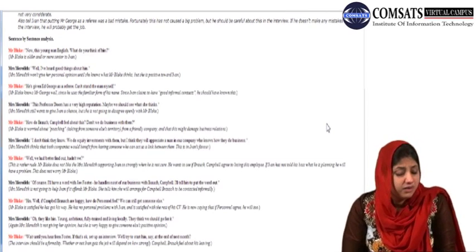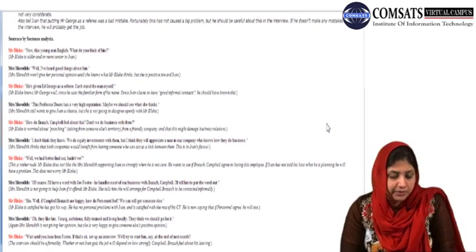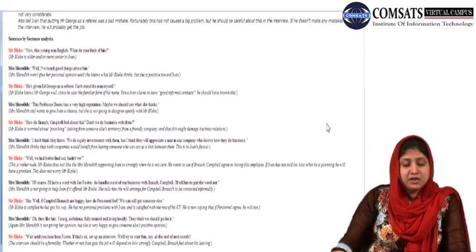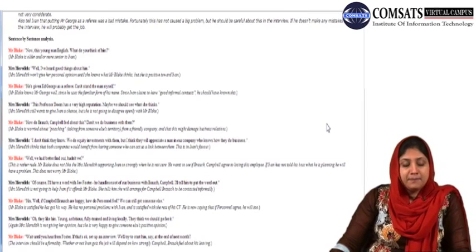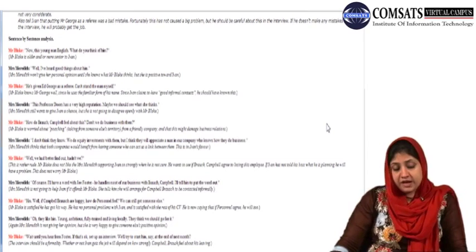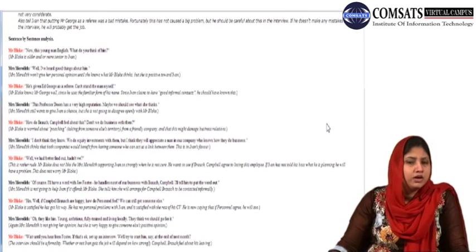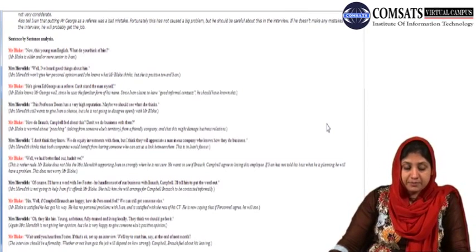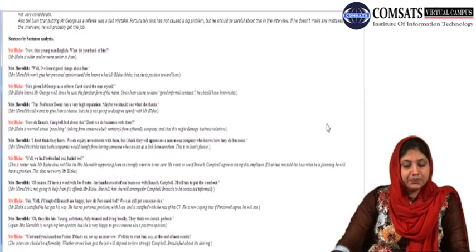Mrs. Murdeth thinks that both companies would benefit from having someone who can act as a link between them. This is in Ivan's favor. Mr. Black says: Well, we had better find out, hadn't we? This is rather rude. Mr. Black does not like Mrs. Murdeth supporting Ivan so strongly when he's not sure. He wants to see if Branch Campbell agreed to losing this employee. If Ivan has not told his boss what he's planning, he will have a problem. Mrs. Murdeth: Of course, I'll have a word with Joe Foster. He handles most of our business with Branch Campbell. I'll tell him to put the word out.